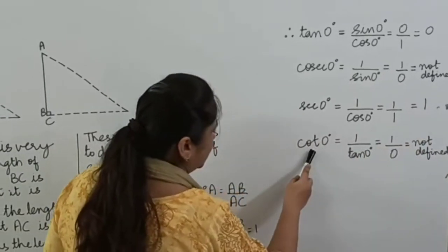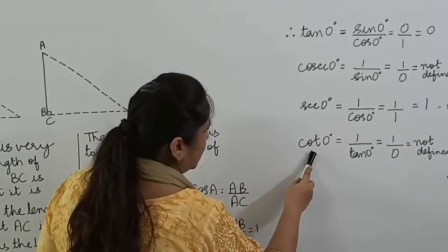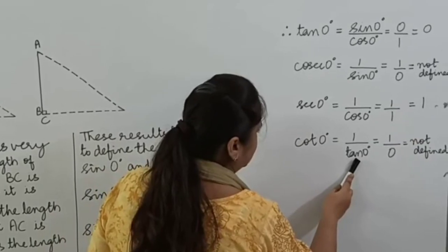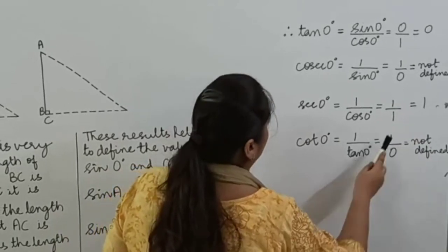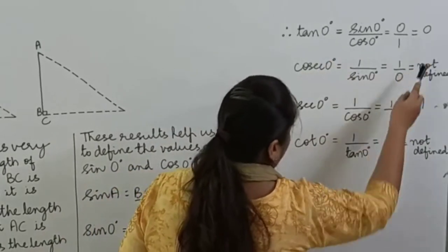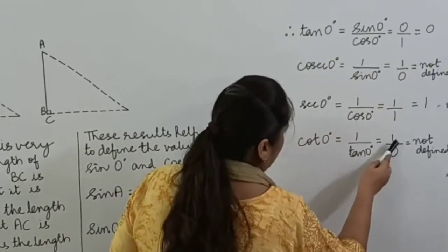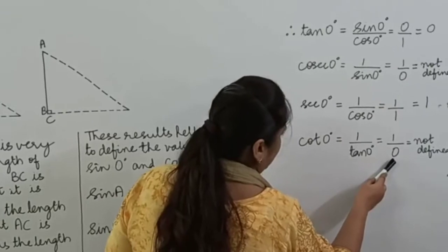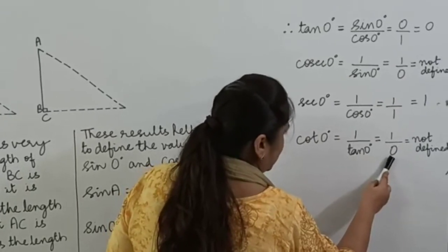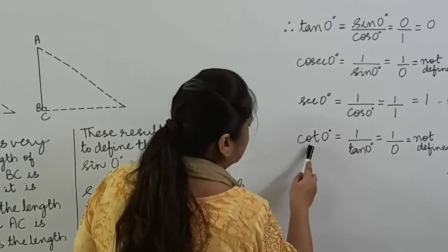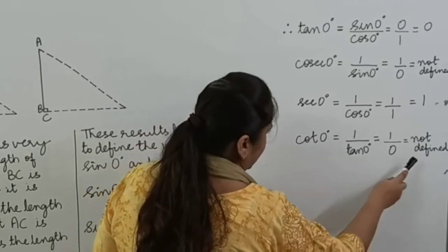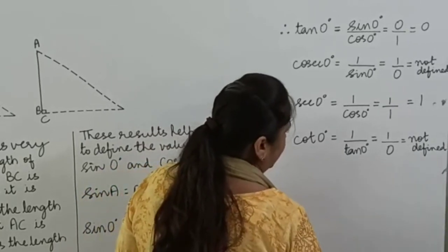Cot 0 degrees is the reciprocal of tan 0 degrees. The value of tan 0 degrees is 0, so cot 0 degrees equals 1 over 0. Division by 0 is not defined, so the value of cot 0 degrees is not defined.